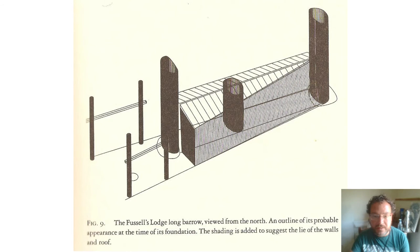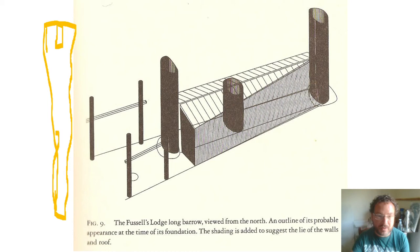Now this is Fussell's Lodge. This is an earthen long barrow in south of England. And what North did was to look at the orientation of the wooden chamber, the wooden mortuary chamber inside the monument. So you'd normally have a mortuary chamber at one end and then this kind of long comet shaped tail almost going back. Some of these can be hundreds of meters long, like the one at West Kennet. So what he was doing was looking at the orientation of the chambers at the end.